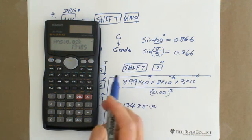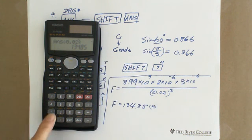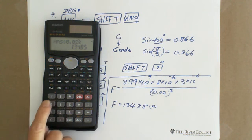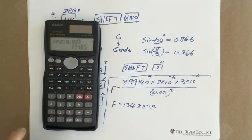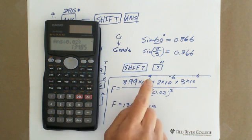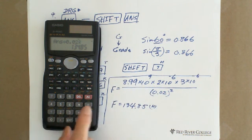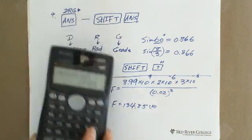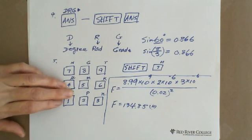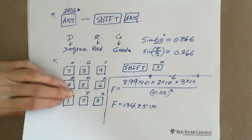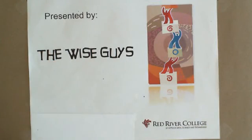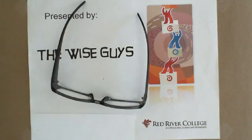So those shortcut buttons are really convenient for performing calculations with huge numbers with high exponents, or small numbers with negative exponents. This is presented by WiseGuides. Thank you.